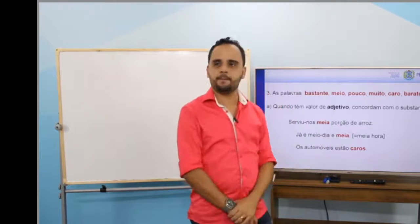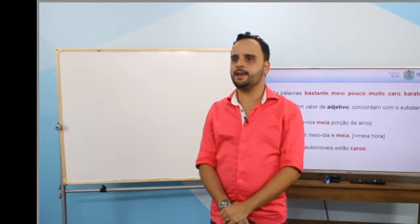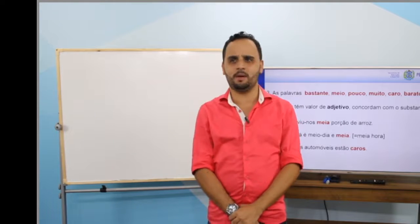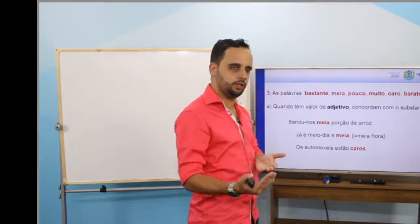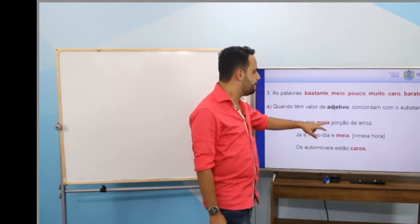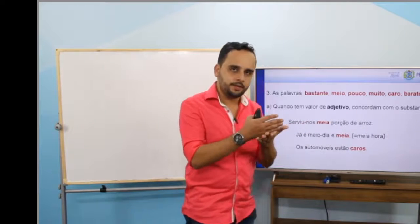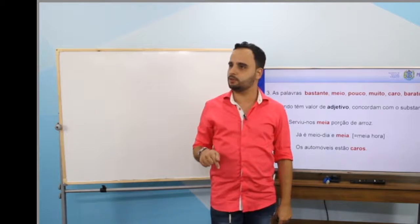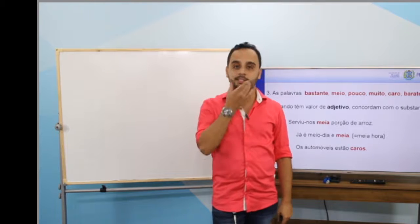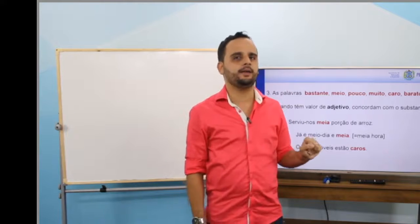Se liga. Por exemplo: ela está meio doente. Não existe 'ela está meia doente' — o que seria uma meia doente? Quando tem valor de adjetivo, logicamente vai concordar com o substantivo. O adjetivo é a palavrinha que vai concordar com o substantivo em gênero e número. Serviu-nos meia porção de arroz — aqui 'meia' concorda com 'porção', é a metade. Você vai usar 'meia' quando quiser fracionar um determinado termo: eu quero meia pizza, eu quero metade dessa pizza. Eu como meia melancia.